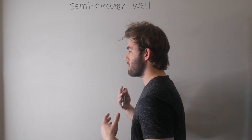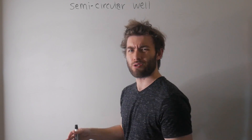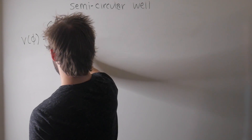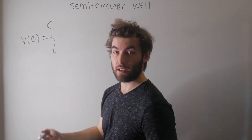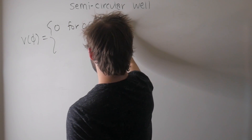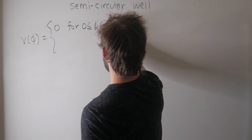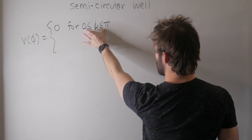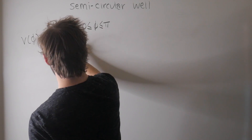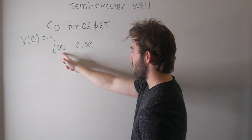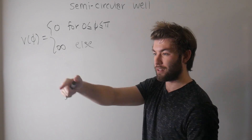It's going to make sense to write everything in terms of cylindrical polar coordinates. Our potential of phi is going to be very similar to the infinite square well — it's zero for our angle between zero and pi, meaning the particle isn't feeling anything if it's inside this interval, and it's infinite elsewhere. So the particle has no chance of being found outside of this semicircular well.